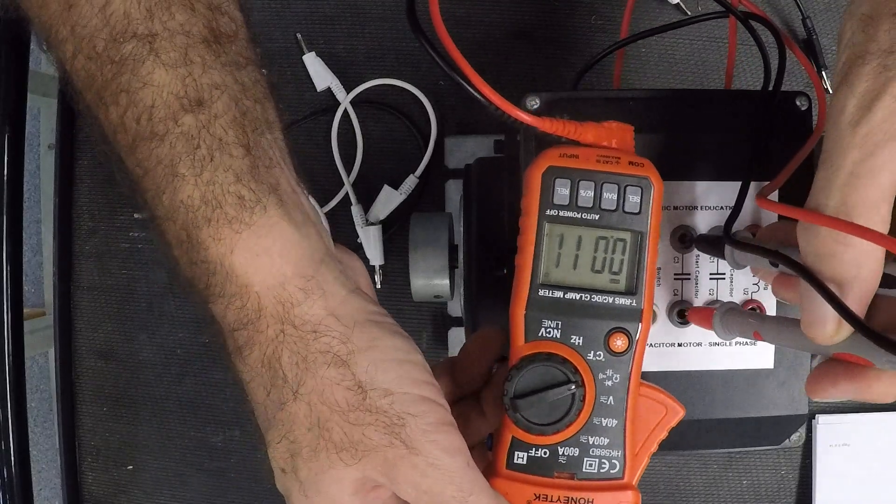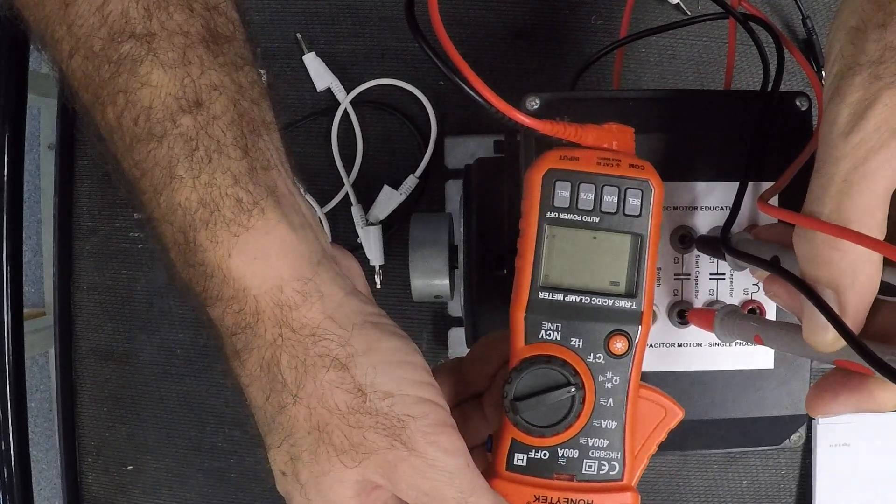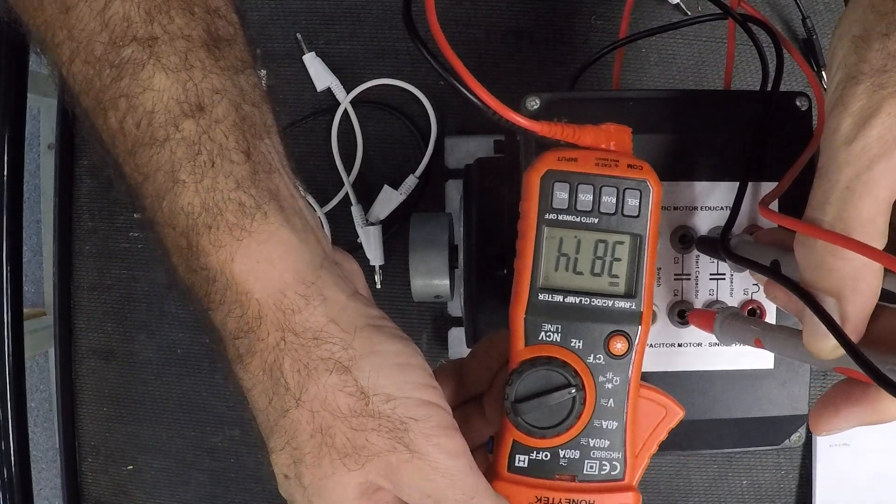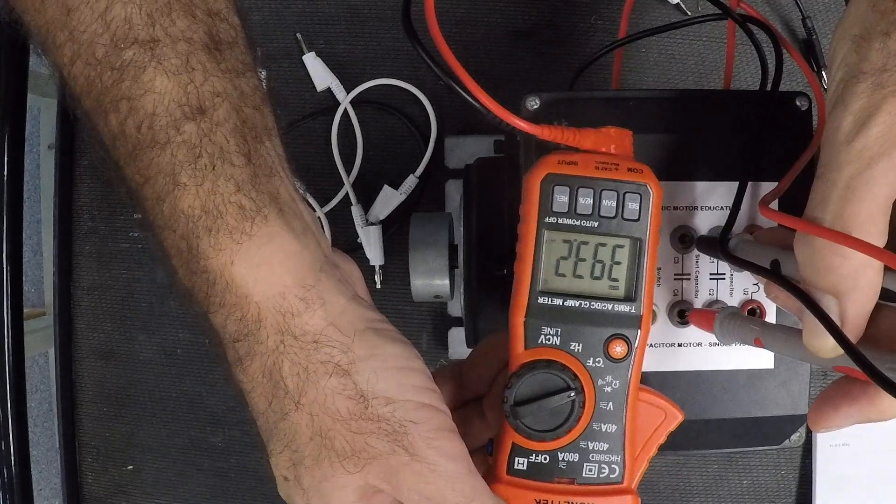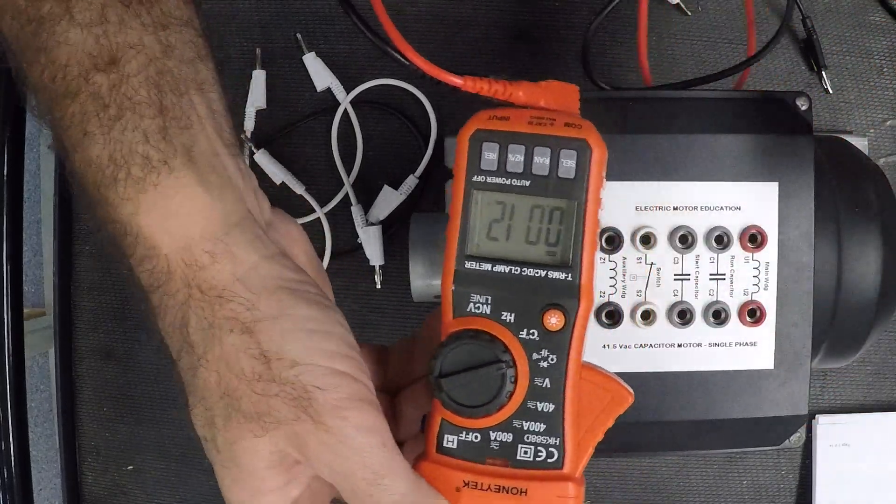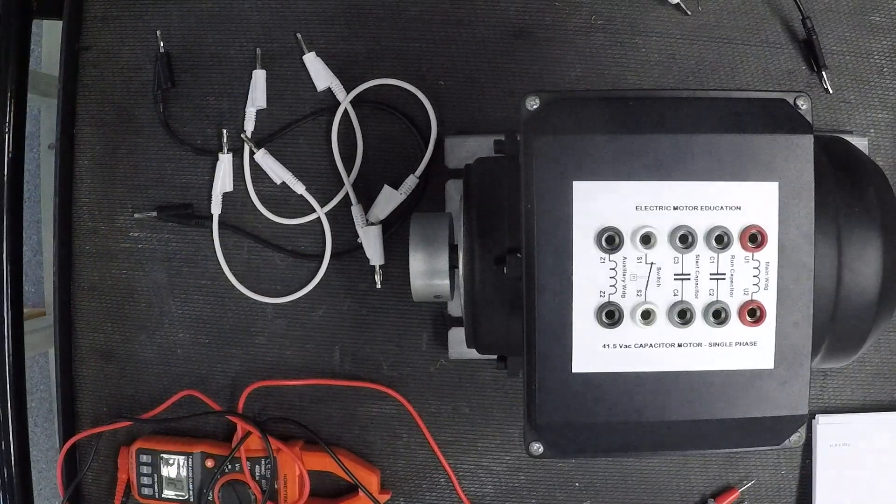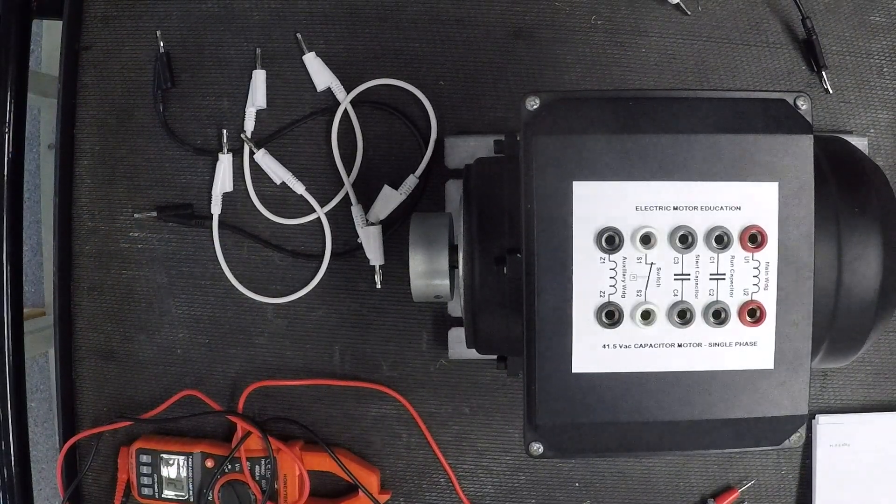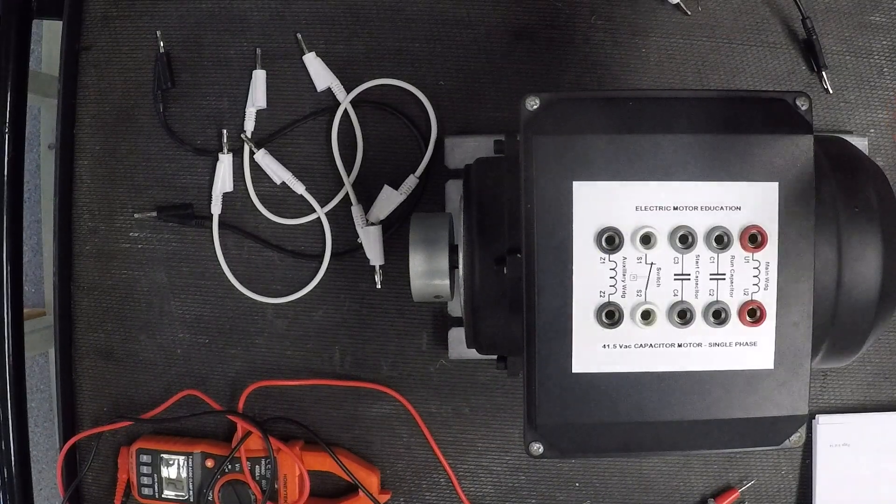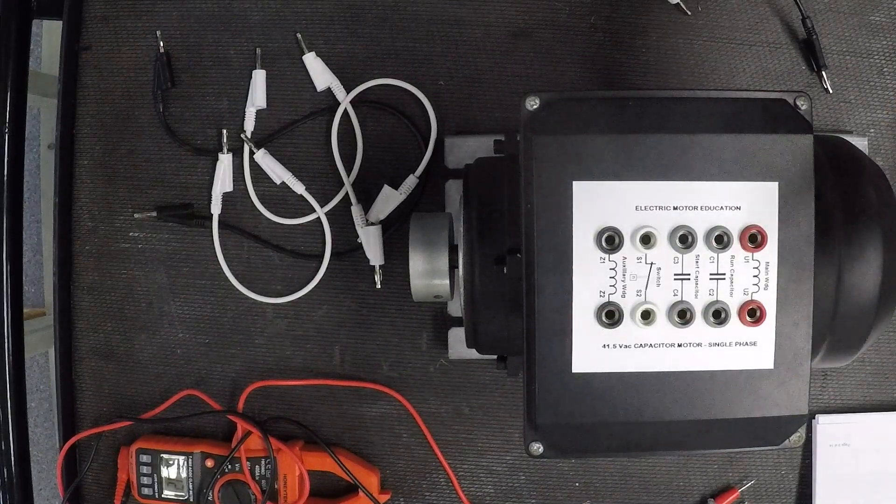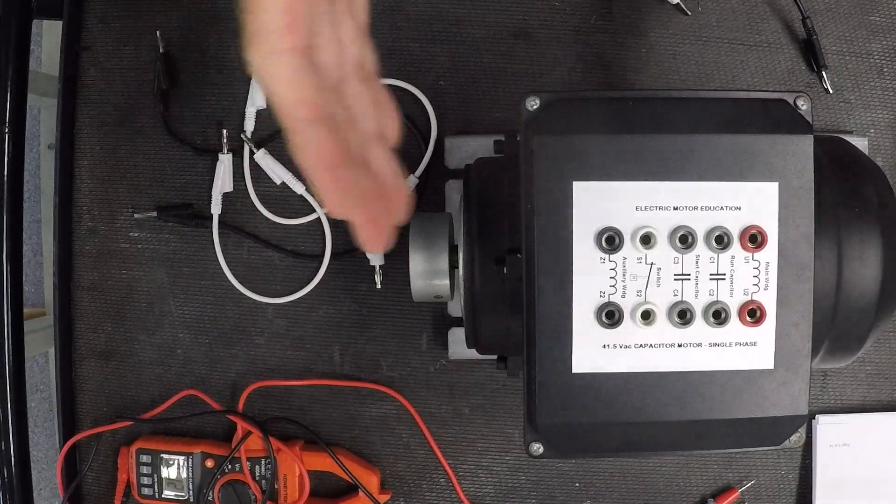If I go to my start capacitor, I should have a much higher reading on that one. Let's see if that's right. I get 384 microfarad. To me, this is just indicating that the capacitors are in working condition. I will have to do a physical or visual check to see if they're bulging or leaking, because we need to make sure the capacitors are good. At this stage, I'm happy with that.